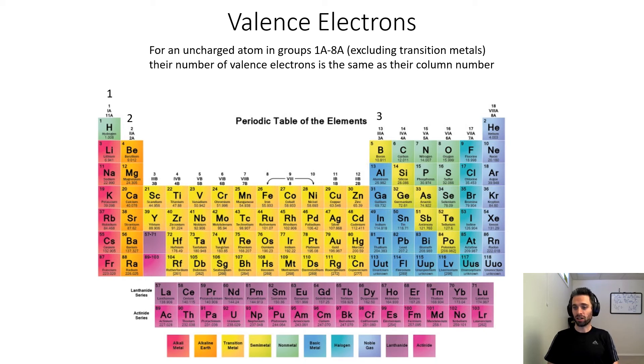Group 3A: boron, aluminum, gallium. These all have three valence electrons. Aluminum, for example, has three valence electrons and ten core electrons.